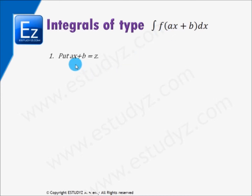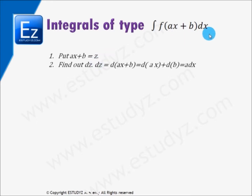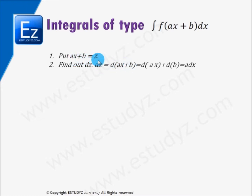If we substitute the whole expression ax + b by another variable z, we'll be left with f(z) dx. We have to replace dx in terms of dz as well. So we differentiate both sides of the equation: dz = d(ax + b). Since a and b are constants and x is a variable, this differentiation gives us a dx.